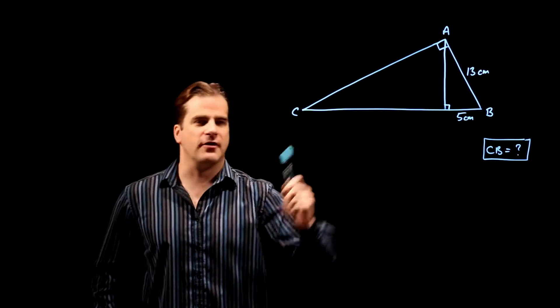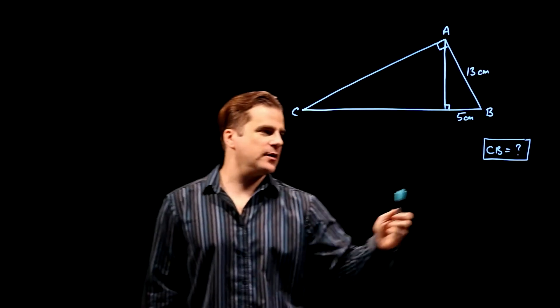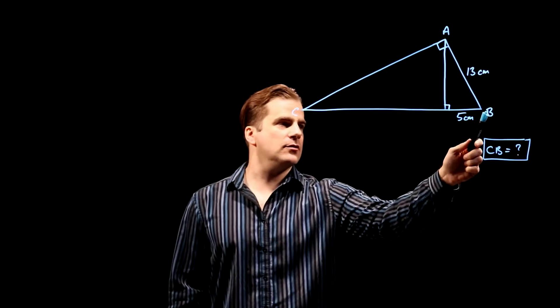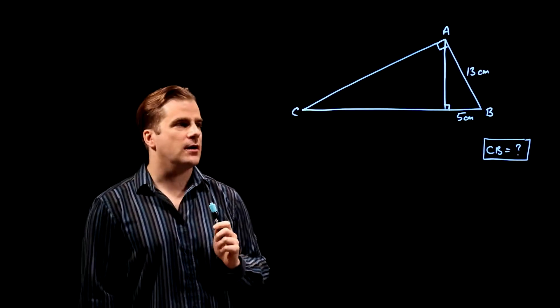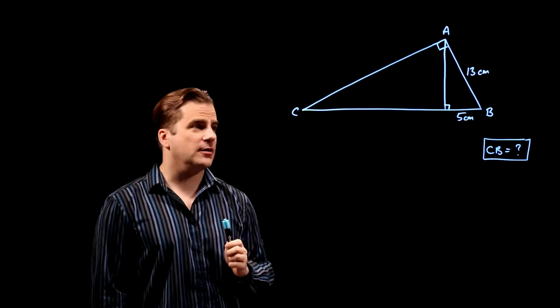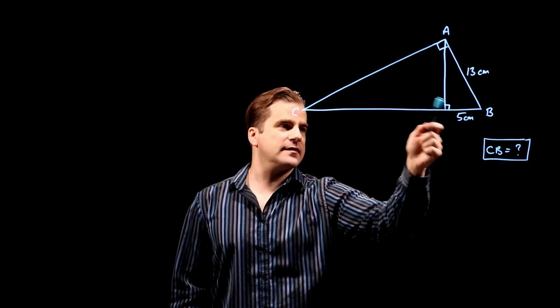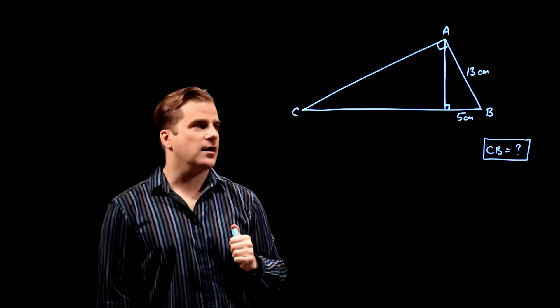Okay, we've been given this triangle here and we have to work out the distance CB. So from there all the way to there. Well, we don't have a lot of information to go on. We know that's a right angle and that's a right angle. So how do we start?